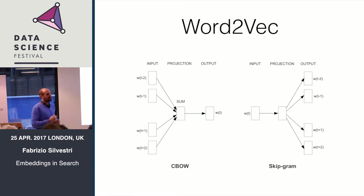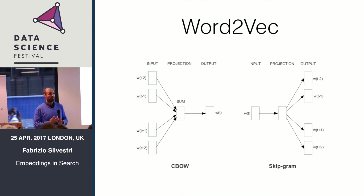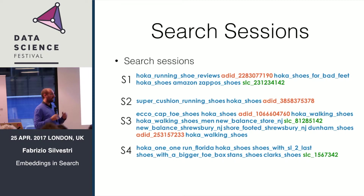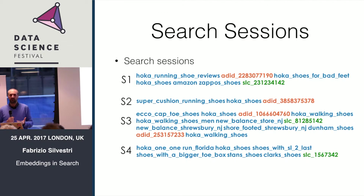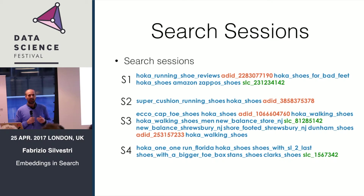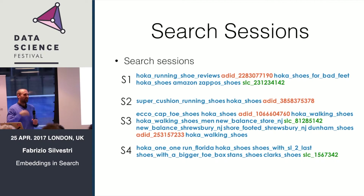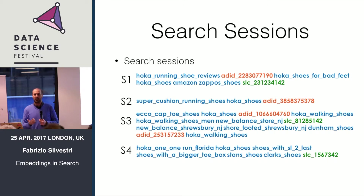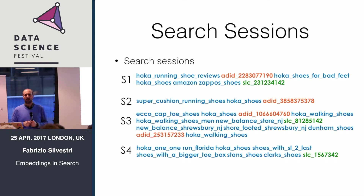Everything depends on the application. In search, one important thing is interpreting queries via their similarities to other queries. In search you have search sessions — the sequence of queries a user is submitting. You can further extend this idea to include not just queries but also actions like impressions, clicks on results, clicks on ads, or in Facebook's case, things like how many times a user sent a friend request to someone who posted something.